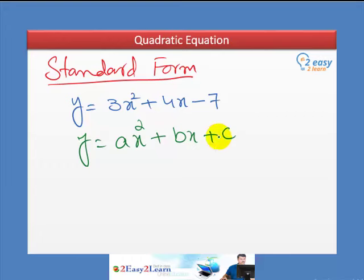b can be 0, c can be 0, but a cannot be 0. a cannot be 0. Because once a is 0, then what will happen?